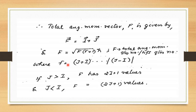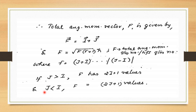The quantum number f can take values from j + i down to |j − i|. If j > i, f has (2i + 1) values; if j < i, f has (2j + 1) values.